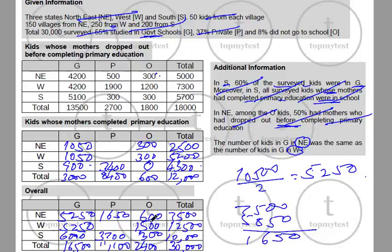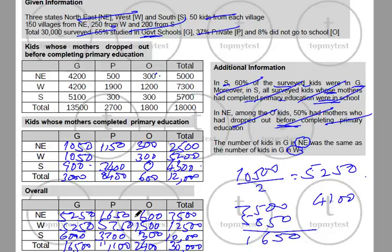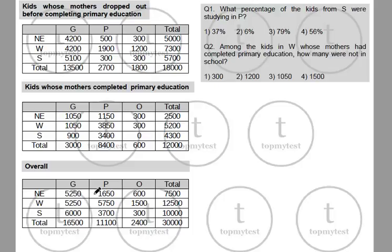West not-dropped-out: total = 5,200; G = 4,000 + 900 more gives 5,000 in G for not-dropped-out (West); subtracting 900 → 4,100 in P. For the remaining cells, 1,650 − 500 = 1,150 and 5,750 − 1,900 = 3,850. All numbers in the table are now determined.